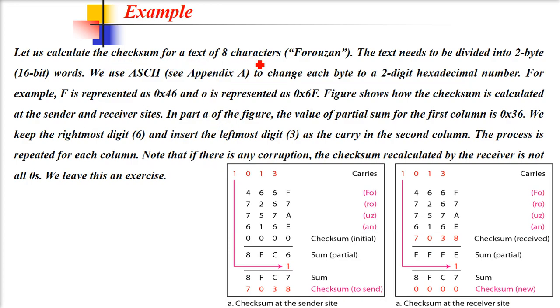Let us calculate the checksum of a text of 8 characters: Forozan, the famous book on data communication and networking. The text needs to be divided into 2-byte, 16-bit words. 16 bits means 8 bits and 8 bits—one byte and another byte. We use ASCII, using appendices in textbooks to change each byte to a two-digit hexadecimal number. For example, F is represented by 0x46, and O is represented by 0x6F.